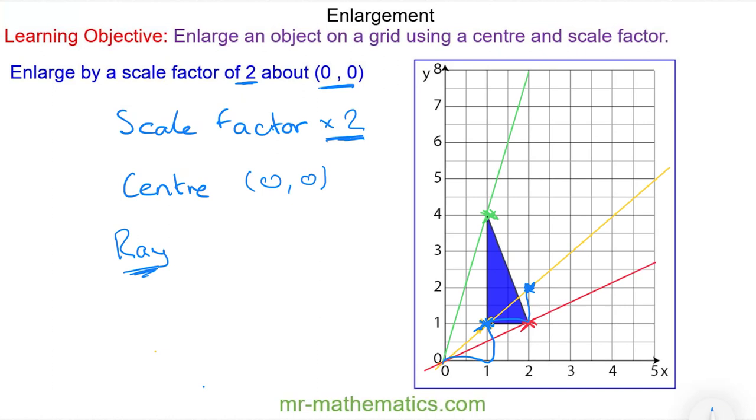I'll do the same for this vertex here. So two across and one up. Again two across and one up. We know it's right because it lies along the same ray.